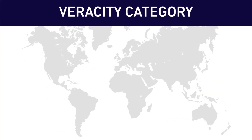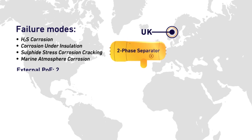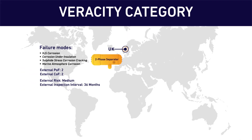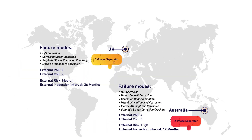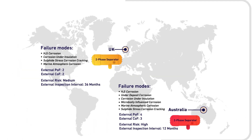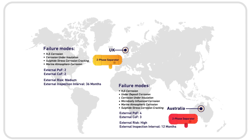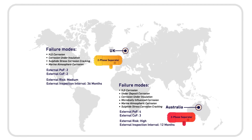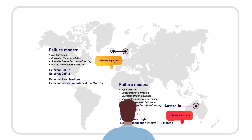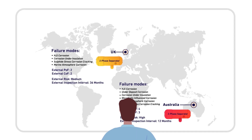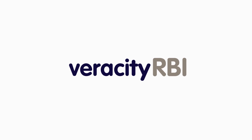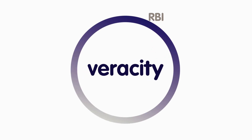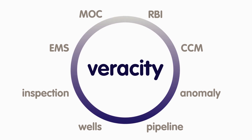With Veracity categories, our clients are no longer alone in their assessments. Results for similar assets can be benchmarked across the Veracity community. Veracity RBI's interconnected yet simple and user-friendly platform creates an environment where the integrity management process is live, inspection planning is optimized, and the benefits of RBI are fully realized. RBI can be set up independently or as part of the wider integrated Veracity platform covering all core equipment categories.